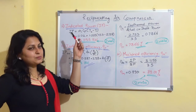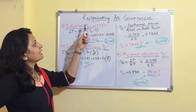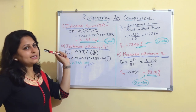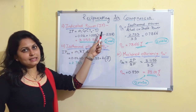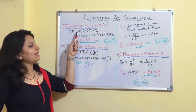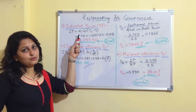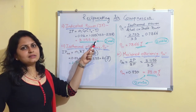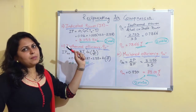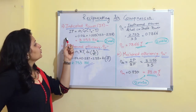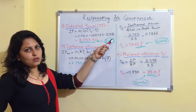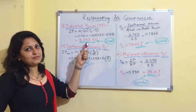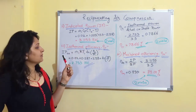Now let us find indicated power. The formula for indicated power is ṁ · Cp · ΔT. When ṁ is in kg/s, the final answer for indicated power will be in kilowatts. Substituting all values, we get indicated power = 3.1155 kW.